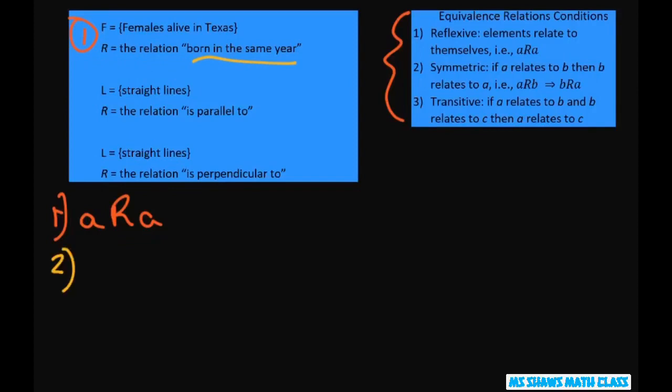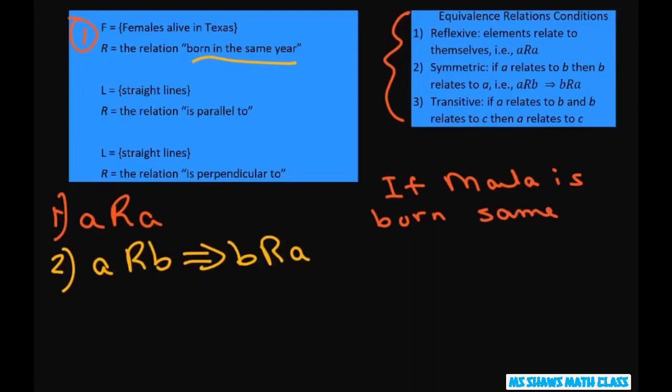And 2, we have A. If A relates to B, then B relates to A. So basically it's like saying if Molly is born the same year as Leanna, then Leanna is born same year as Molly. So that's how you would write that.